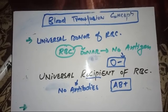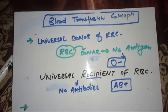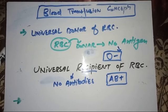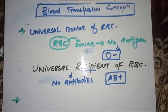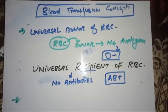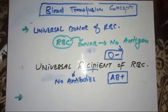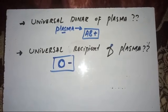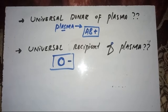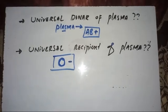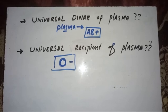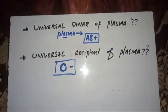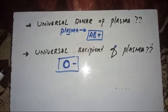Today I will talk about a very conceptual topic with a lot of MCQs coming from it. The data is actually very confusing. Universal donor of RBC is O negative, universal recipient of RBC is AB positive, universal donor of plasma is AB positive, and universal recipient of plasma is O negative. The universal donor of blood is O negative and the universal recipient of blood is AB positive, but here we divide it into plasma and RBC.